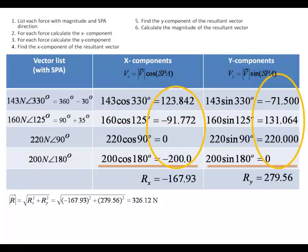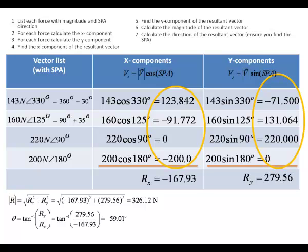We don't just need the magnitude though. We also need the direction of the resultant vector. In order to do that, we're going to use right trig again, and our right trig is going to be using the tangent function. When we plug that information in, we undo the tangent function for the ratio of the y component over the x. Our calculator gives us a negative 59.01 degrees.